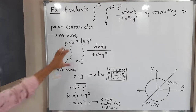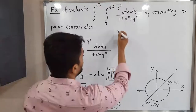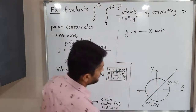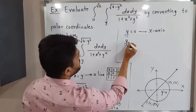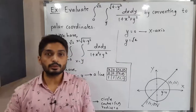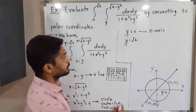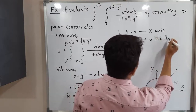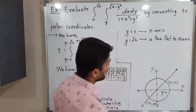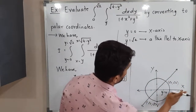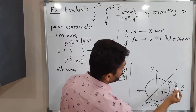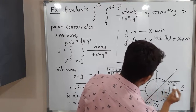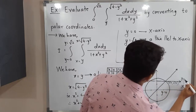Now let us consider the remaining limits: y equals 0 and y equals root 2. You know that y equals 0 is the equation of the x-axis. And y equals root 2 is a line parallel to the x-axis passing through y equals root 2. Note that the point (√2, √2) lies on this line, so the line passes through that intersection point.